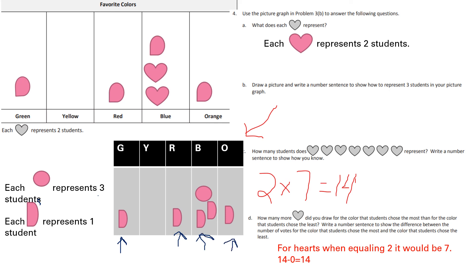For Part C, how many students does this many hearts represent? There are seven hearts when you count them, and since each one represents two, two times seven is 14. For Part D, for hearts equaling two, it would be seven hearts for the most. Fourteen minus zero equals 14, because the least is zero — there's nothing there. So 14 minus zero is 14.